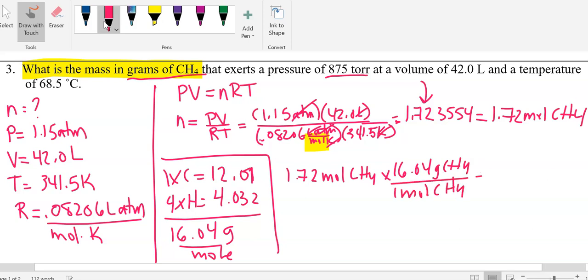So I'm going to get 27.588 grams. I'm going to round that to 3 sig figs, so our answer is 27.6 grams of methane.